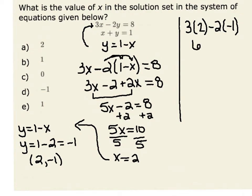3 times 2 is 6, and negative 2 times negative 1 is a positive 2, which is indeed equal to 8. This verifies that the point 2, negative 1 is indeed the solution. This gives us an x-coordinate of 2 in the solution set.